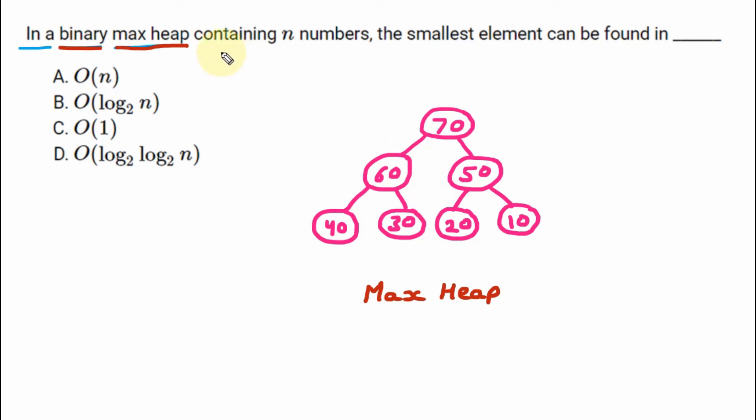Now we are going back to the question. So binary max heap contains n numbers. We can see that here 1, 2, 3, 4, 5, 6, and 7. So here we have 7. That means the value of n is 7. So we have n numbers, means 7 numbers. The smallest element can be found in.